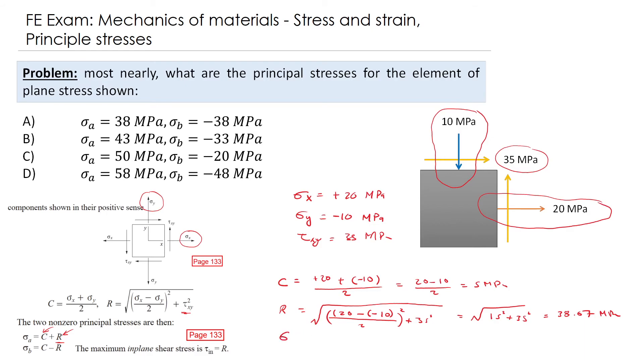So sigma a equals 5 plus 38.07, which is 43.07. And sigma b equals 5 minus 38.07, which is negative 33.07. So our answer is B.